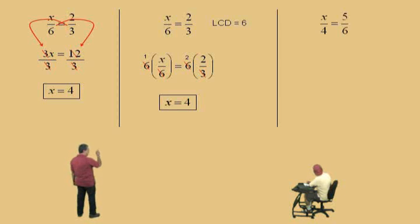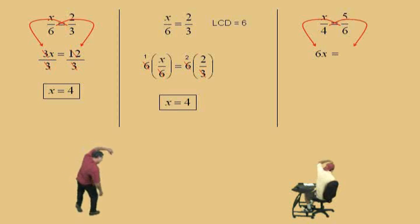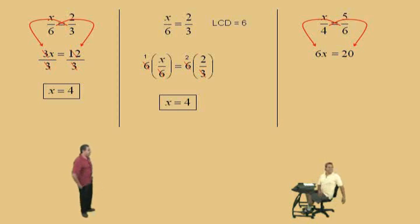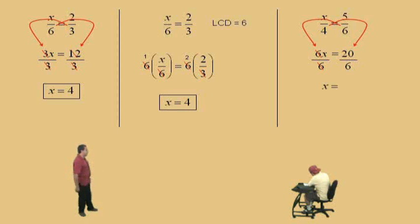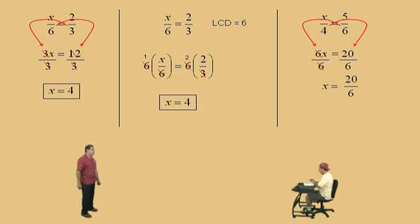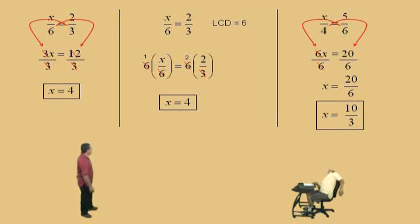Okay, here we go, Charlie: x over 4 equals 5 over 6. Let's do our cross multiplying. What do we get? 6x. That's right. And this way? 20. Very nice, Charlie. Now, how do we solve for x? Divide by 6. That's right — divide both sides by 6. So we get x equals 20 over 6. Dividing the top and the bottom by 2, we get 10 over 3. Very nice, Charlie — 10 thirds.